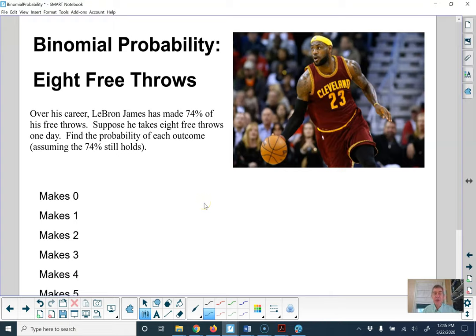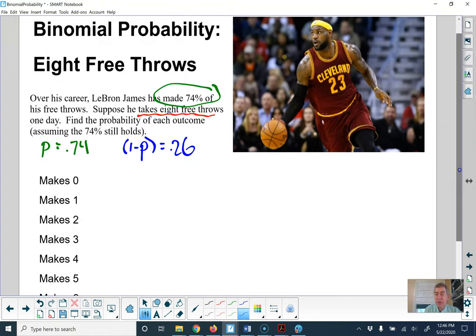Here's an example that's not the same. So binomial probability, LeBron shooting free throws, making eight free throws. Here's the information. He's taking eight free throws. That's the first thing we know. The probability that he makes it is 74%. So P is 0.74. Therefore, the probability that he misses it is 0.26. If he makes 74% of his free throws, that means he misses 26% of his free throws. So 74% make, 26% miss.